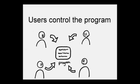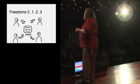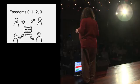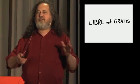With software, there are two possibilities. Either the users control the program, or the program controls the users. It's inevitably one or the other. So in order for the users to control the program, they need the four essential freedoms. And that's the definition of free software.